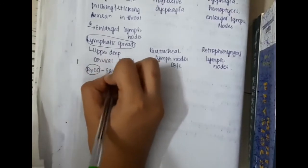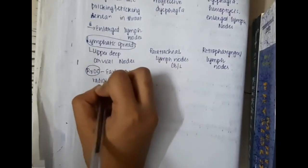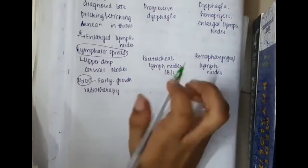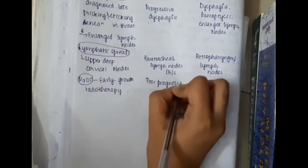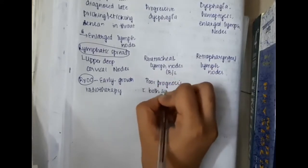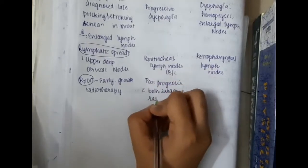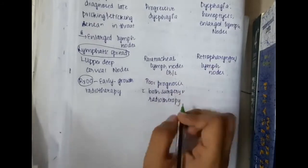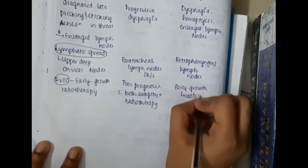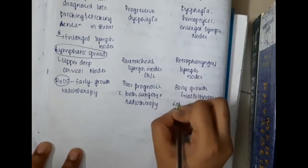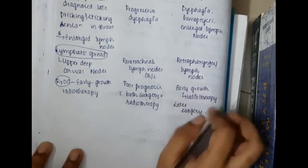If you see the treatment of choice, carcinoma pyriform sinus shows early growth and radiotherapy. Carcinoma post cricoid region shows poor prognosis with both surgery and radiotherapy. Then carcinoma in the posterior pharyngeal wall, if there is early growth it causes radiotherapy. Later it shows surgery.